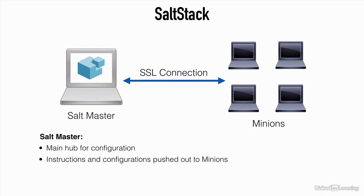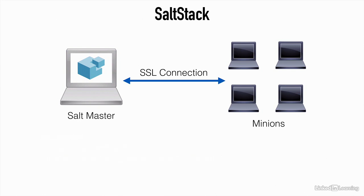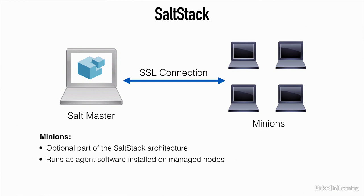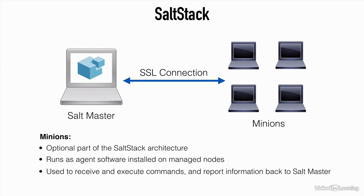The main SaltStack server is called the SaltMaster. This is the main hub where configuration takes place and the point from which instructions and configurations are pushed out. These are pushed out to what are called minions, which are an optional part of the architecture and are essentially agents installed on the managed devices. These minions are used to receive and execute commands and also to report information about the node back to the SaltMaster.